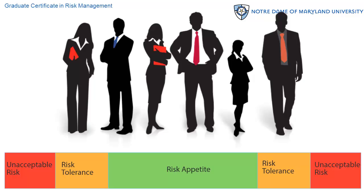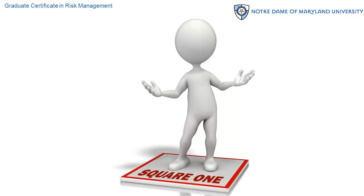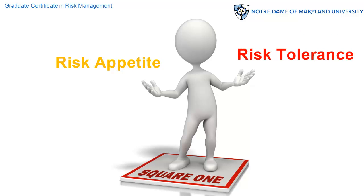No firm will willingly operate in the range of unacceptable risk. Once the tolerable range of risk is exceeded, the firm will take risk management action to return risk level to within the firm's appetite. So, that is the difference between these two concepts as honestly as I can discern them. In other videos, we will stick closer to some of the official language — that is when it may help you to keep these examples in mind. Bear in mind some of the definitions out there are confusing, some are wrong, and some are useful.